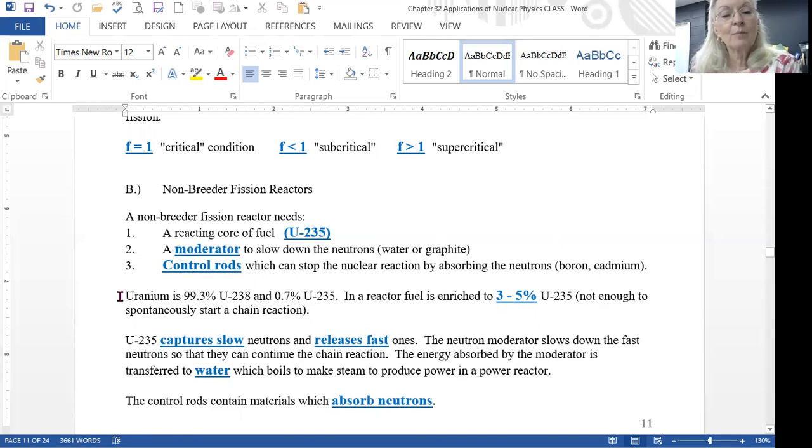Typically control rods are made out of boron or cadmium or sometimes even a mix. The uranium in our power plants is typically in the natural state. Uranium is 99.3% U-238 and only 0.7% uranium-235. In our nuclear reactor, the fuel is only enriched to 3 to 5% uranium-235. The reason for keeping the enrichment levels so low is that we want to make sure there's not enough uranium that a stray neutron could start an uncontrolled chain reaction. So it's a safety precaution. Uranium-235 captures slow neutrons and releases fast ones.